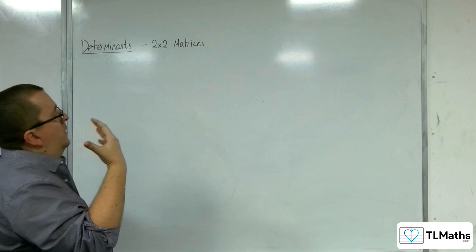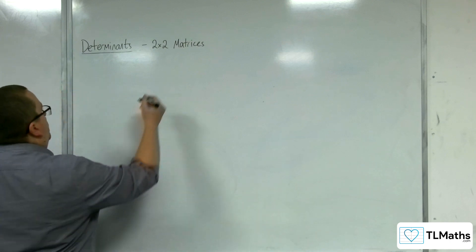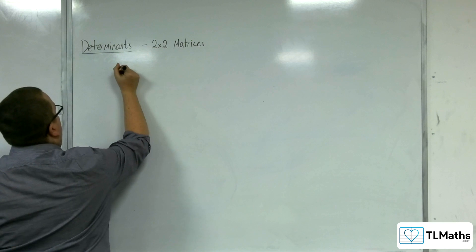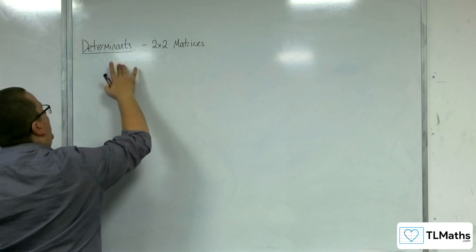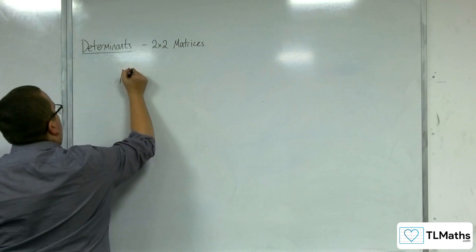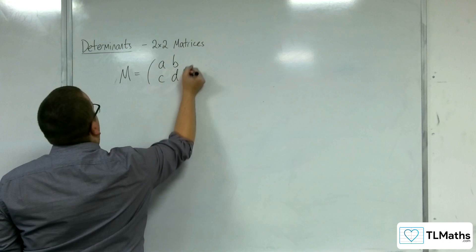Now, in order to formalize this, the way that we write the determinant of a matrix... Let's say we have a matrix, let's call it M. So M is my matrix, a general matrix, with entries a, b, c, d.